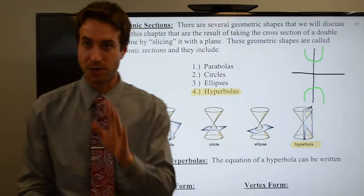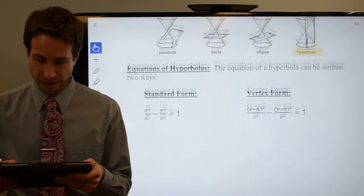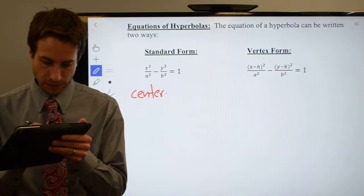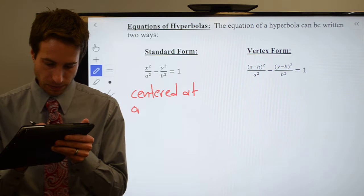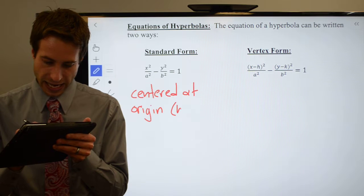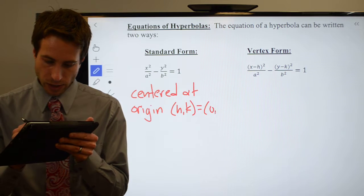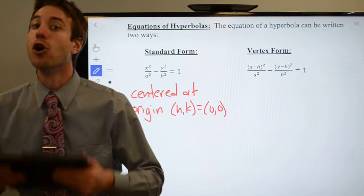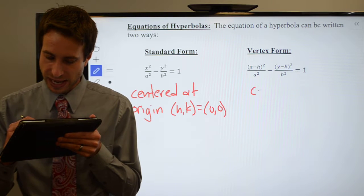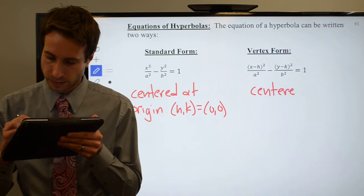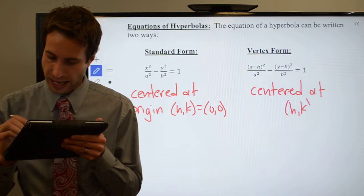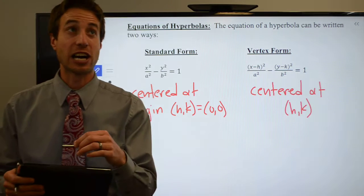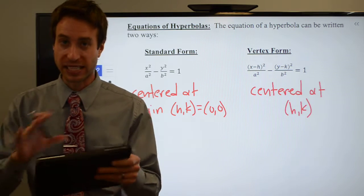You'll have two equation forms: one centered at the origin, where h and k are zero so they drop out, and one where you do have h and k, centered at the point (h, k). The orientation can be vertical or horizontal. Let's take a look at a diagram of what these hyperbolas look like.